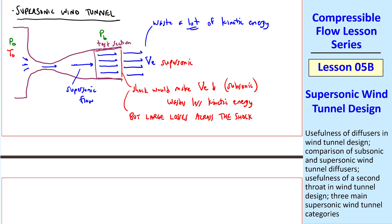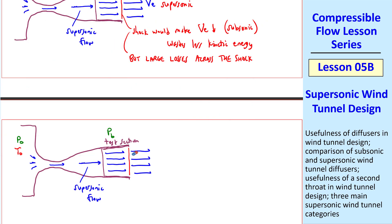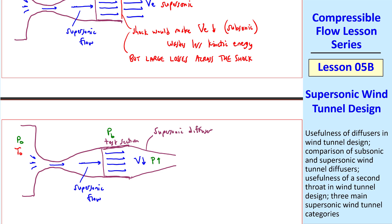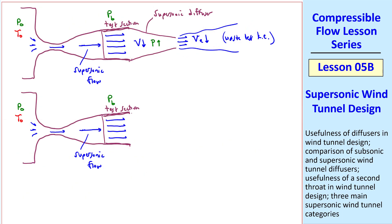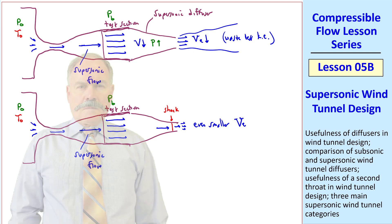Now consider adding a diffuser, like we did with the subsonic case. A diffuser for supersonic flow is the opposite of what we had for subsonic — namely, we must use a converging duct. Again, speed goes down and pressure goes up through this supersonic diffuser, so the exit speed goes down and we waste less kinetic energy. If the diffuser is well designed and goes to a small enough area, you can get a shock in the duct where the flow goes from supersonic to subsonic, giving an even smaller V_E. But since Mach number goes down through the diffuser, this would be a very weak shock — for example, around Mach 1.1.